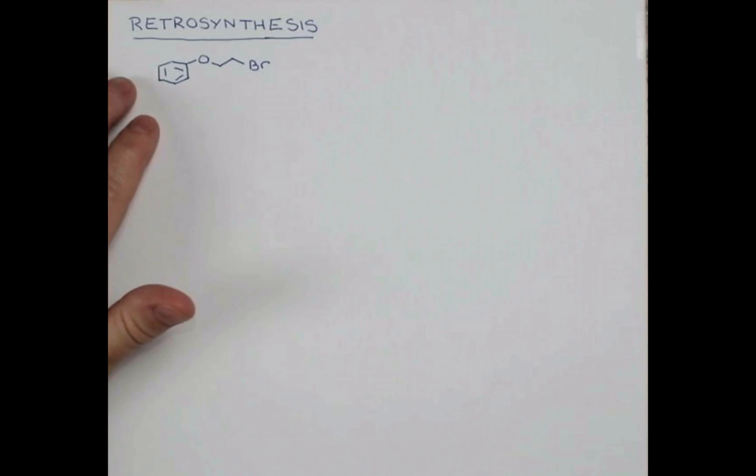We'll start with a pretty simple molecule to introduce some terminology and concepts. This is our target molecule, and we want to think about how to make this from commercially available chemicals. We're going to use an arrow that allows us to show that we're thinking in reverse. This is the retrosynthetic arrow or a retrosynthesis arrow.